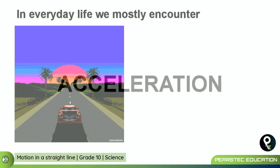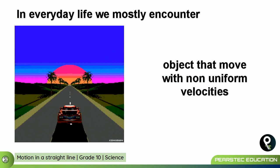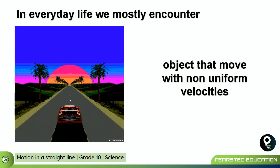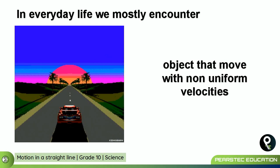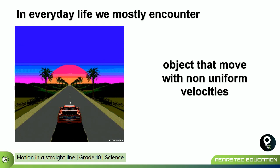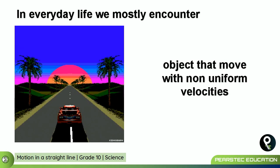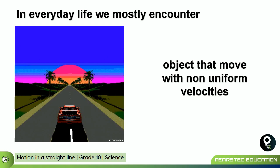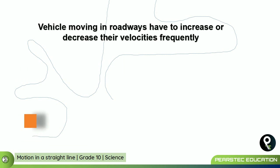What is acceleration? Let's understand that. In everyday life, we mostly encounter objects that move with non-uniform velocity. Now if you see closely that picture, that car is going with the same speed without any changes. But when you are walking on the street, do you see the vehicles going at the same speed for such a long time in a straight line? I don't think so. The vehicles on our streets will go in this way.